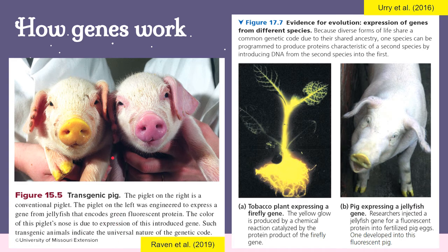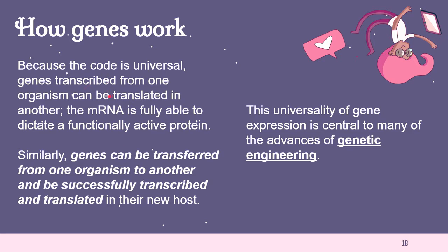Transgenic animals demonstrate the universal nature of the genetic code — it is possible to transfer genes from one species to another. Because the code is universal, genes transcribed from one organism can be translated in another; the mRNA is fully able to dictate a functionally active protein. Even the gene from a jellyfish can be successfully transcribed and translated by a pig's body. This universality of gene expression is central to many advances in the field of genetic engineering.